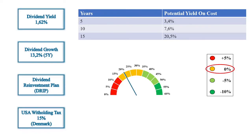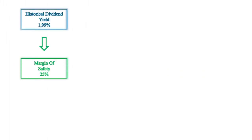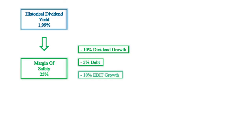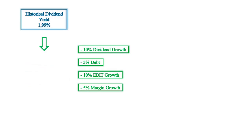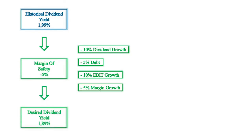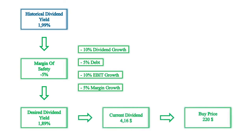Since every metric from my analysis has now been collected, it is time to adjust the margin of safety: minus 10% for dividend growth, minus 5% for debt, minus 10% for EBITDA growth, and minus 5% for margin growth. Thereby the new margin of safety becomes minus 5%. This leads to a desired dividend yield of 1.89%, and with a current dividend of $4.16, I should therefore not pay more than $220 for the stock. By ignoring the margin of safety, the fair price of the stock is $209.